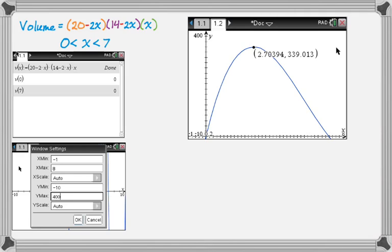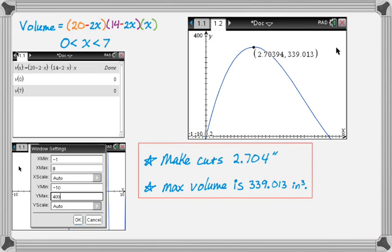So I would then just write up my answer. So I want to make cuts that are 2.704 inches. I usually round three decimal places, unless it specifies otherwise. And then the maximum volume is going to be 339.013 cubic inches. And that's how I would always go about solving this problem. It's a very common problem. You're definitely going to have to solve it at some point. And I hope you found this helpful. Good luck.